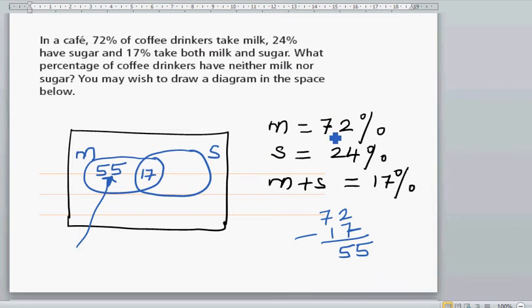When you have to take away 17, it's because when you say there are 72% who take milk, it doesn't mean they are only taking milk. Out of them, there are 17% who take milk and sugar.